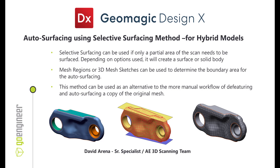This method can also be used as an alternative to the more traditional manual workflow of making a copy of the mesh, de-featuring some of the design intent features, and then coming back to model those features in. This function actually creates a copy for us in the workflow, and then depending on the options, it will create a solid or surface body.